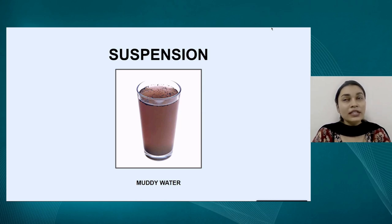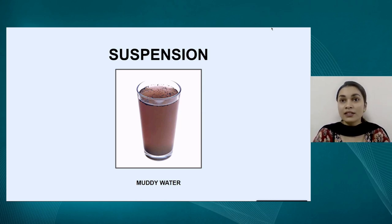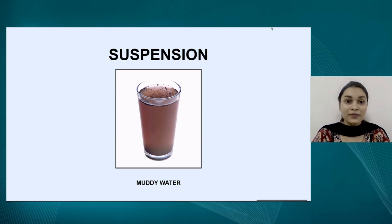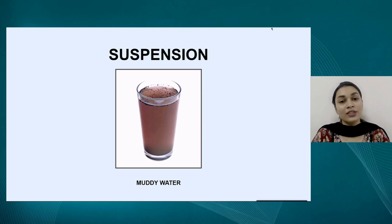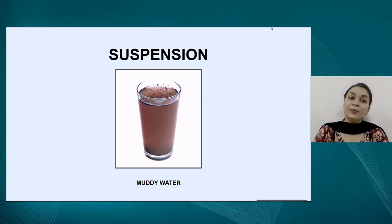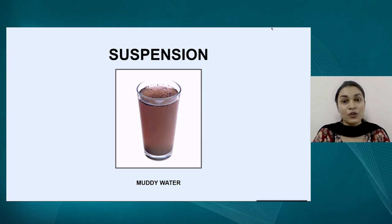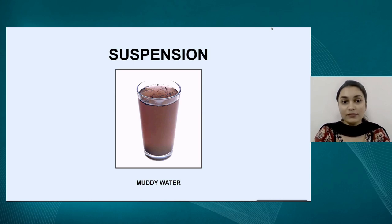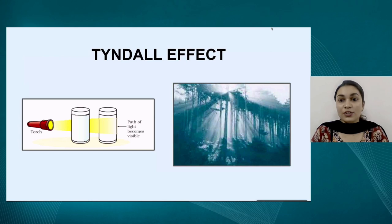An important point about suspensions: when particles are suspended in the medium, they do scatter light. But when they settle down at the bottom, they are no longer able to scatter light because the medium above consists mainly of the solvent. Other examples of suspensions include a mixture of flour in water, dust particles in air, and milk of magnesia, which is also known as magnesium hydroxide.